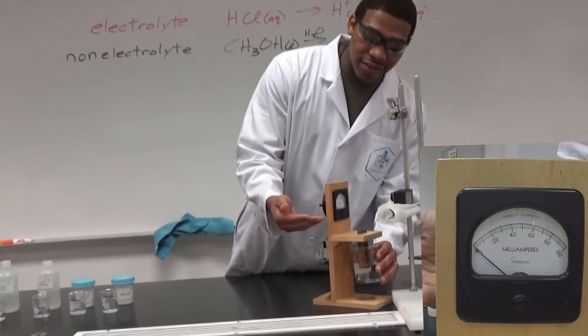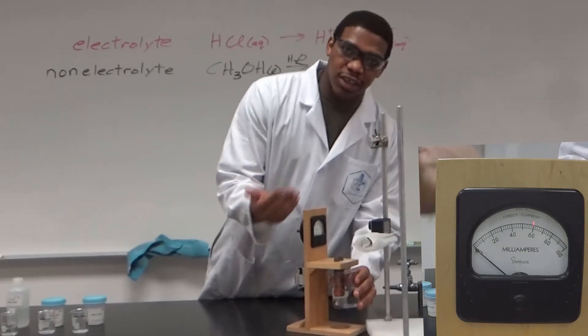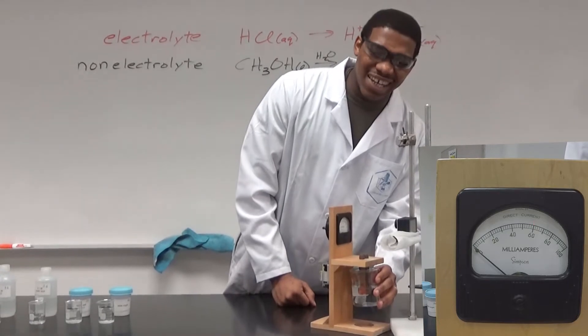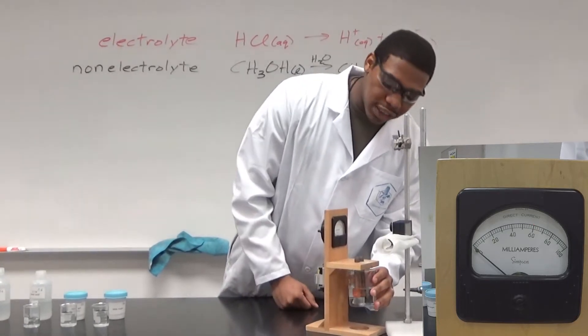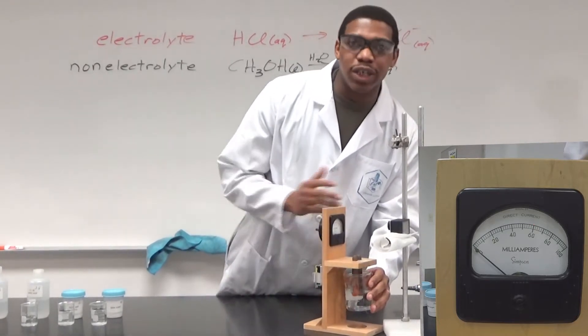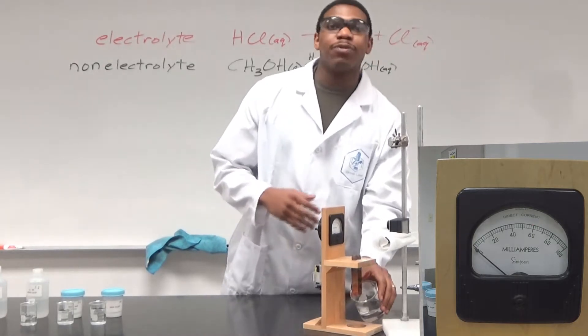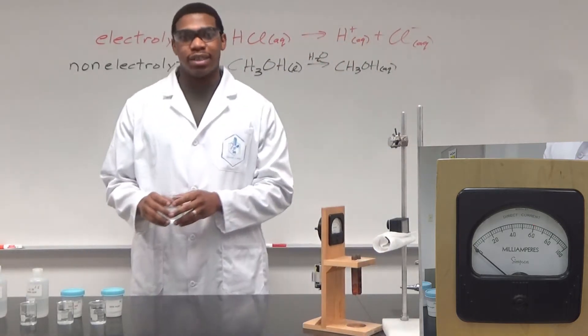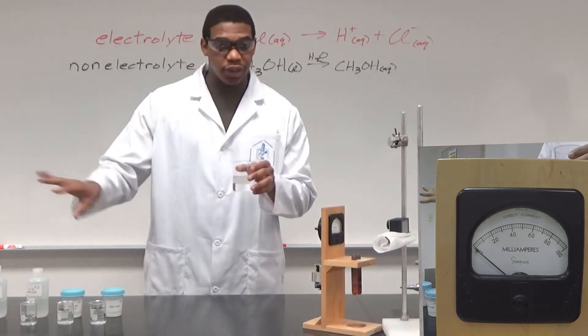On the left side, if that arrow starts to spike up, then you know the solution is conductive. As we see here with the DI water, there's really no movement in that meter, so we know it's not a conductive solution, which makes sense. There's really no ions present in DI water.